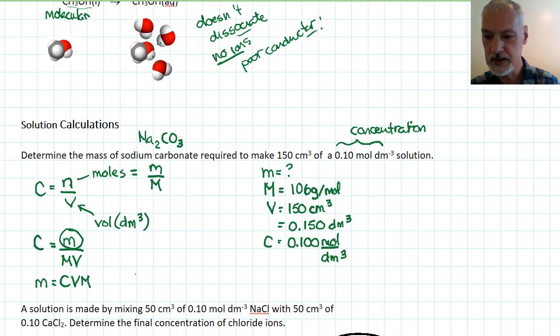Let's put that information in. Our concentration is 0.100 moles per decimeter cubed, and I'm going to multiply that by the volume, 0.150 decimeters cubed, and lastly my molar mass, which is 106 grams per mole.